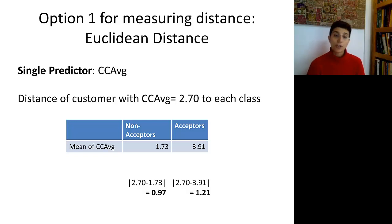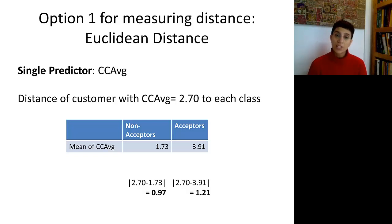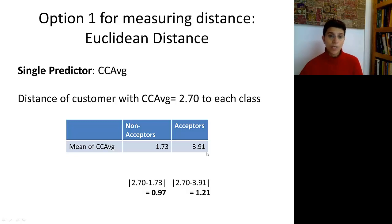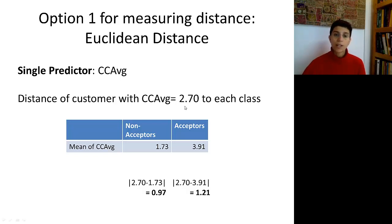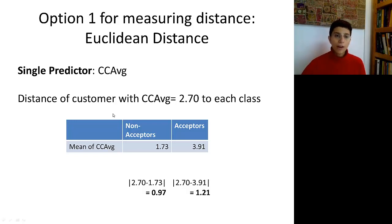How far is this customer from the center of the non-acceptors class, and how far from the acceptors class? What we need to do first is compute the CC average for the non-acceptors, which turns out to be 1.73. For the acceptors class, the average turns out to be 3.91 — remember this is an average of 480 numbers. In Euclidean distance, we simply take the absolute difference or the squared difference. The closer class center turns out to be the non-acceptors.